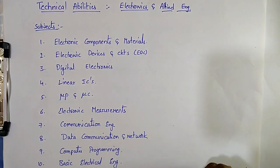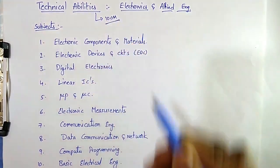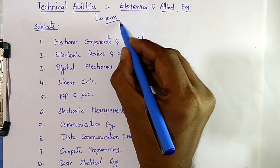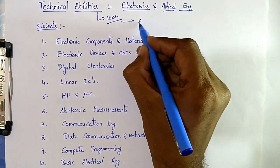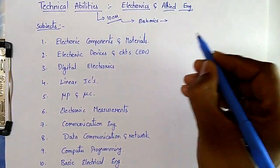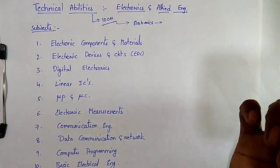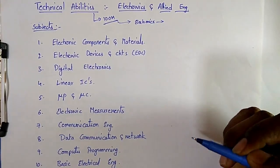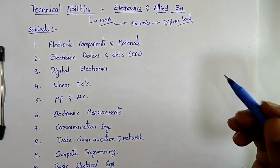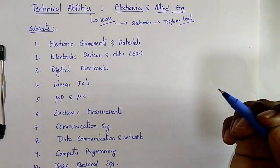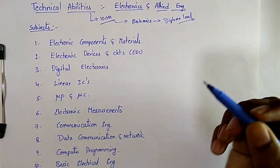Coming to each section — technical abilities has 100 marks weightage, so it is very important for CBT-2. This time the technical ability section is different for each branch. Electronics students need to study only the electronics subjects — no need to study other branches. RRB JE is a diploma level job, so the question paper is in diploma standard only. You need to study all the basics of subjects. Don't expect difficult questions like GATE — it is very different from GATE.